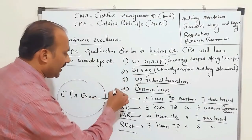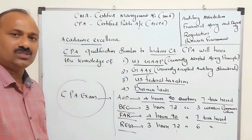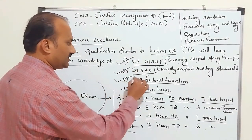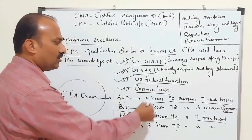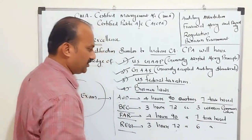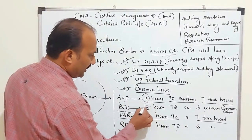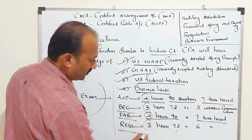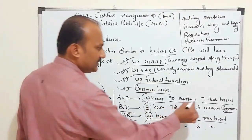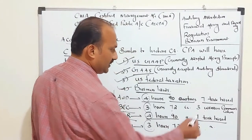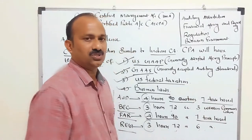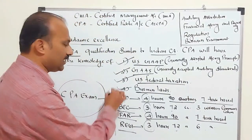These are the examination rules and regulations for CPA — covering GAAP, GAAS, US Federal Taxation, and business law. The time frame is 4 hours, 3 hours, 4 hours, and 3 hours respectively, with 90 and 72 multiple-choice questions, plus 7 task-based, 3 written communication, 7 task-based, and 6 task-based questions.